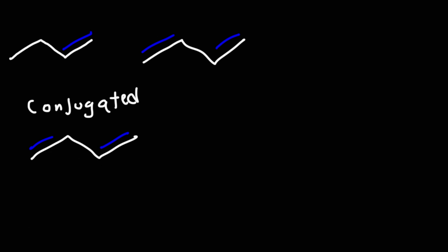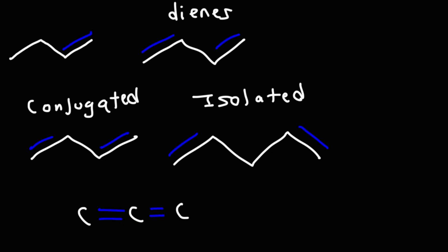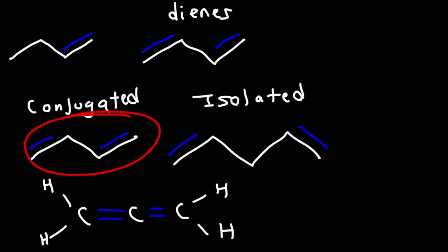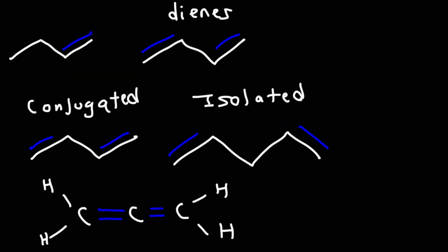Conjugated dienes have special characteristics. There are other types of dienes you need to be familiar with. This is an isolated diene because the double bonds are too far apart from each other. And then you also have cumulated dienes, where the double bonds are very close to each other. Of these three, the most stable is the conjugated diene due to resonance. An isolated diene reacts in the same way as a regular alkene because the double bonds are far apart. But a conjugated diene reacts in a different way, and we're going to focus on that today.